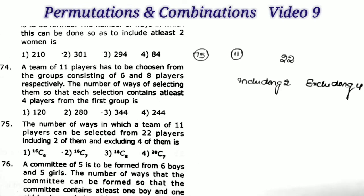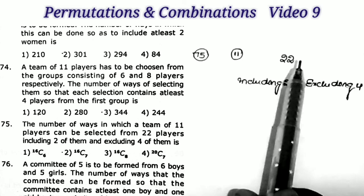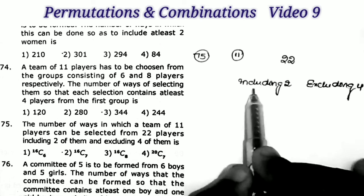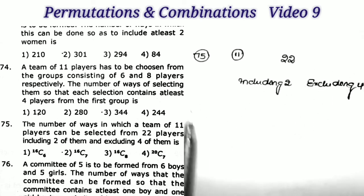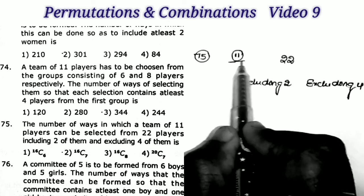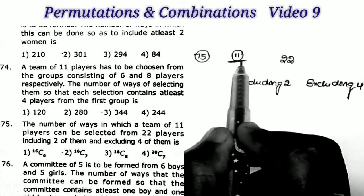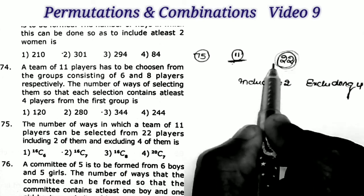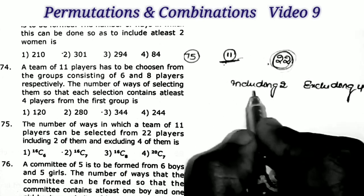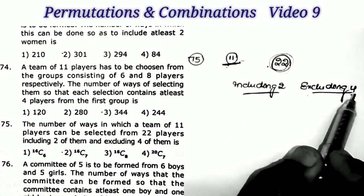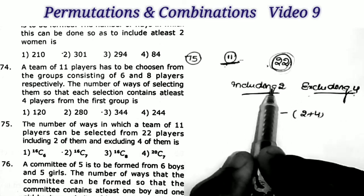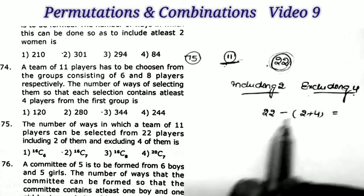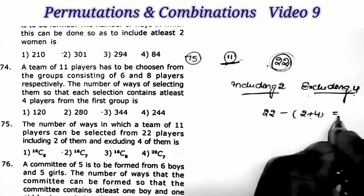Next question, number 75: the number of ways in which a team of 11 players can be selected from 22 players, including 2 of them and excluding 4 of them. We remove both the 2 included and 4 excluded members from the total: 22 − 6 = 16 remaining members.